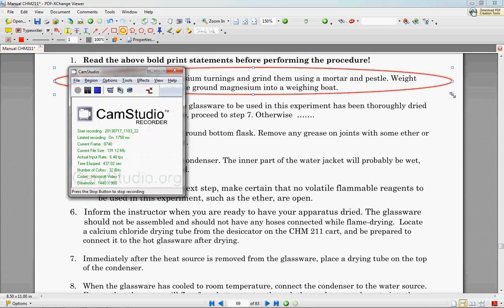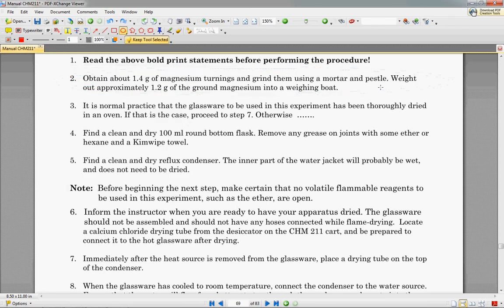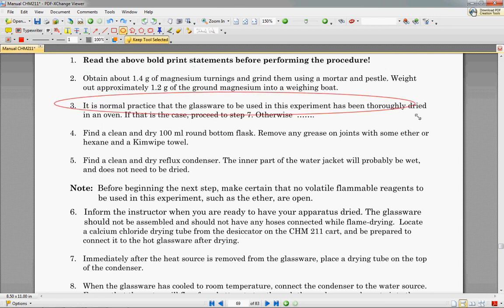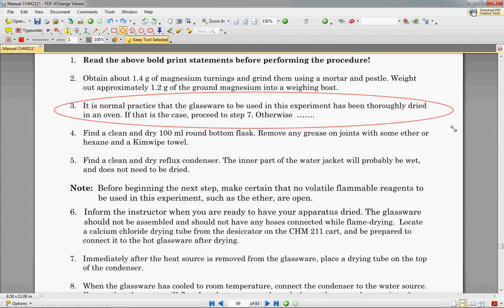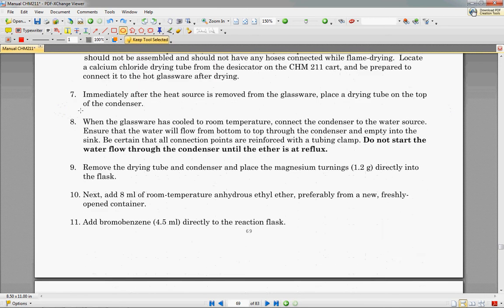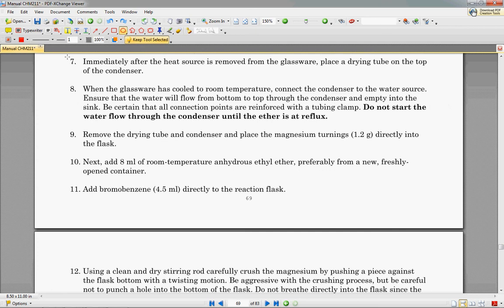we are going to obtain about 1.4 grams of magnesium turnings and grind them using mortar and pestle. Weigh out about 1.2 grams of the ground magnesium into a weighing boat. Then the glassware will be dried, so we can skip steps four through six and go directly to seven.